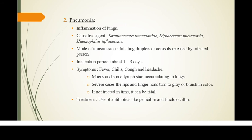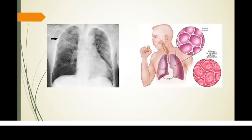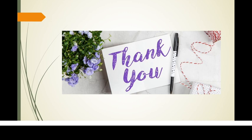In severe cases, the lips and fingernails turn gray or blue in color. If untreated, the condition can be fatal. Treatment for pneumonia involves the use of antibiotics like penicillin and flucloxacillin. The first image shows the formation of pus or liquid in the lungs, and the second image clearly shows the normal air sac compared to the inflammatory air sac filled with fluid.